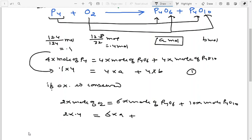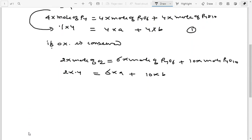Now we have two equations and two variables. 4a plus 4b equals 0.4, or we can say a plus b equals 0.1. This is equation number 1.